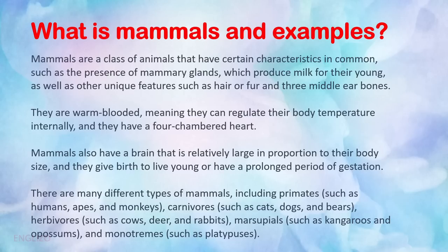They are warm-blooded, meaning they can regulate their body temperature internally, and they have a four-chambered heart. Mammals also have a brain that is relatively large in proportion to their body size, and they give birth to live young or have a prolonged period of gestation.